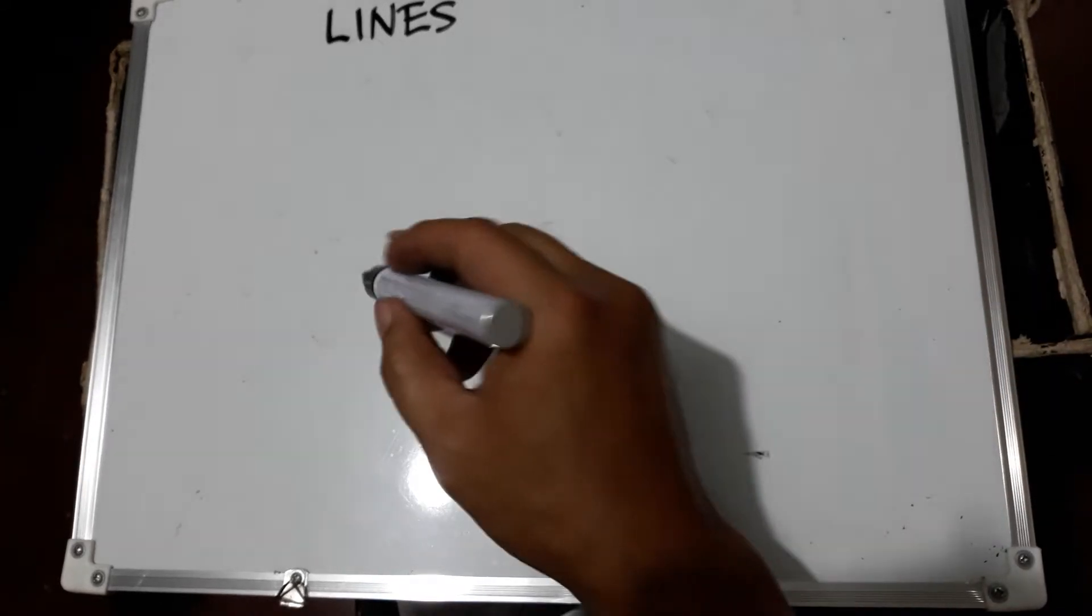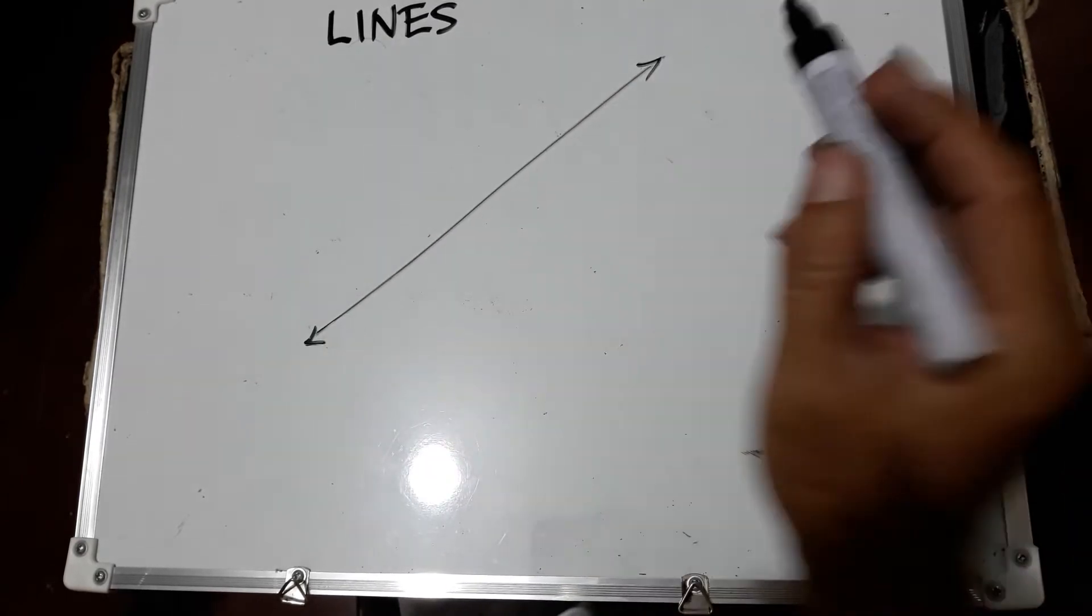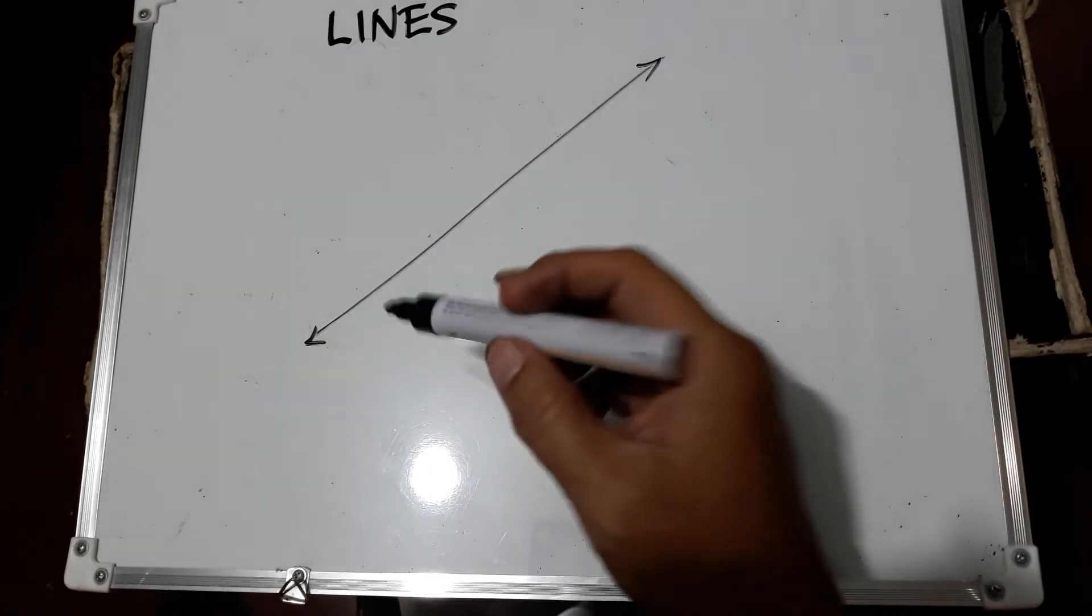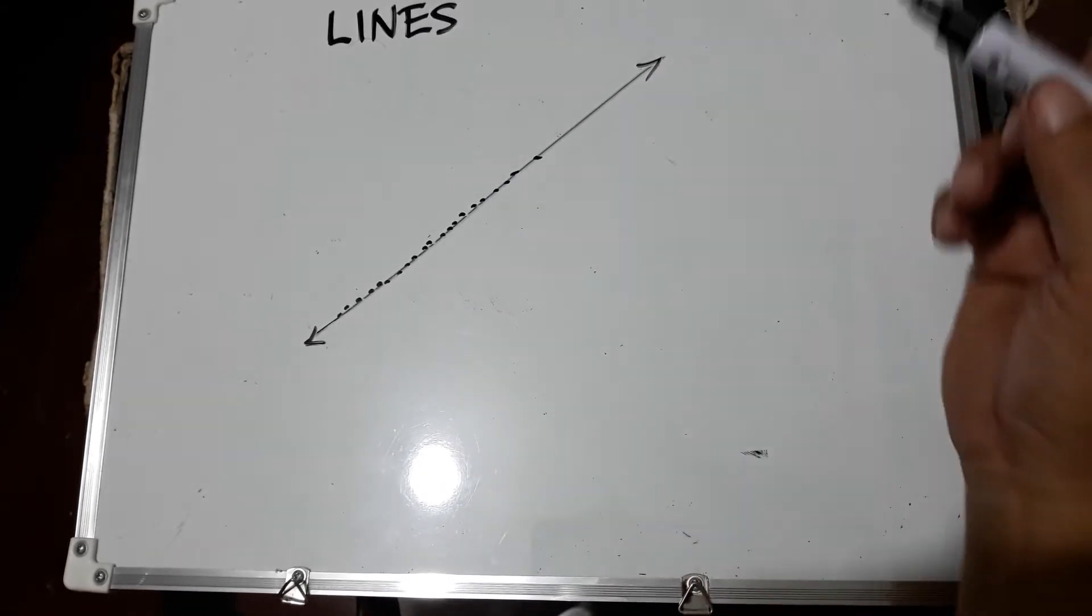The topic is about lines. So if a line is like this, how many points are there in this line? There are infinite number of points. They are located close to each other. You cannot count them.